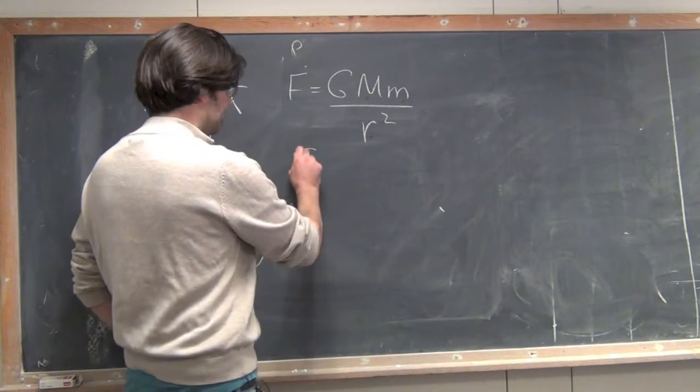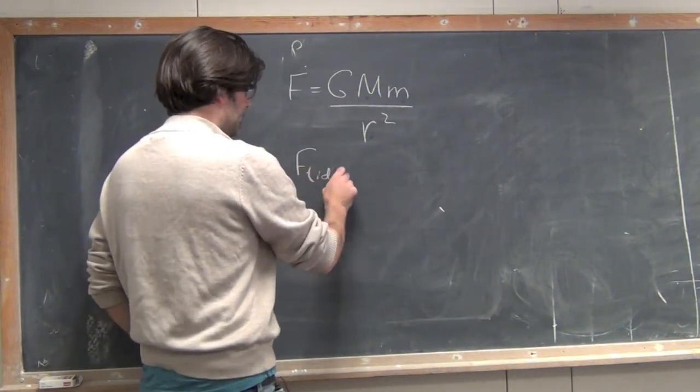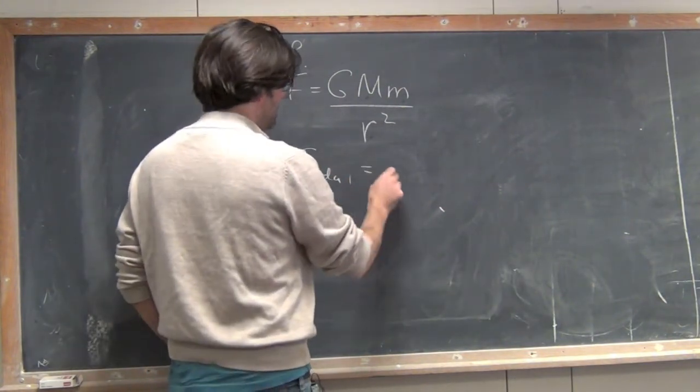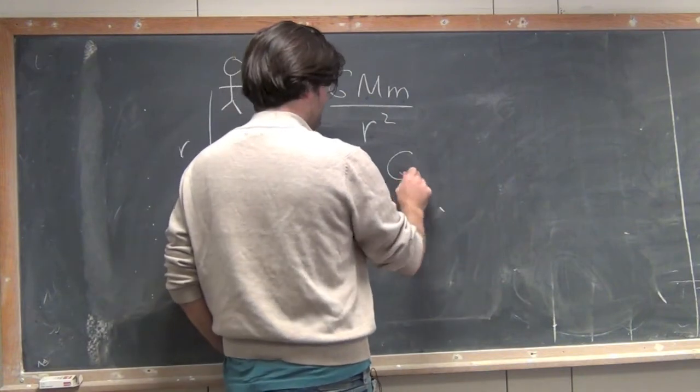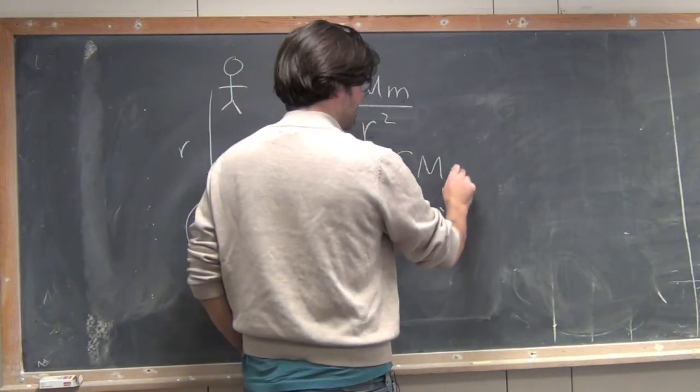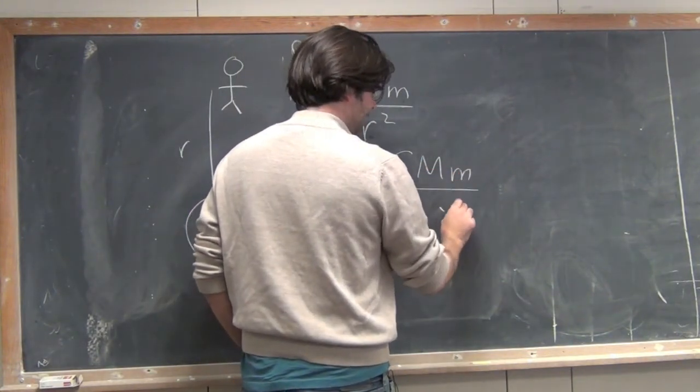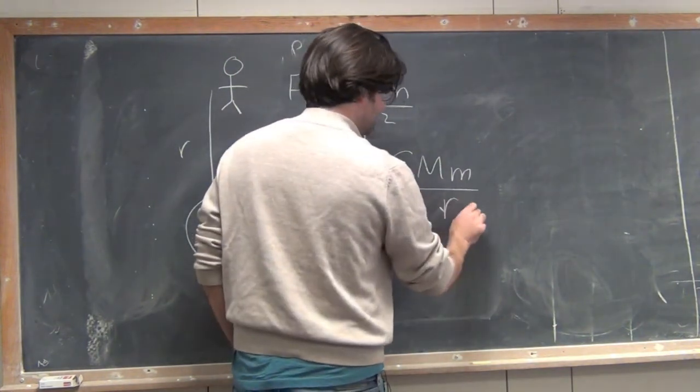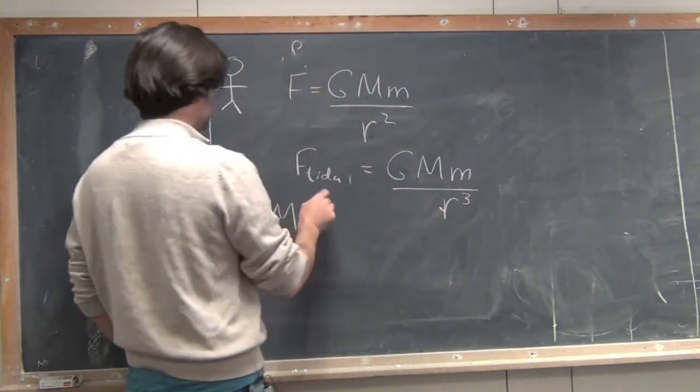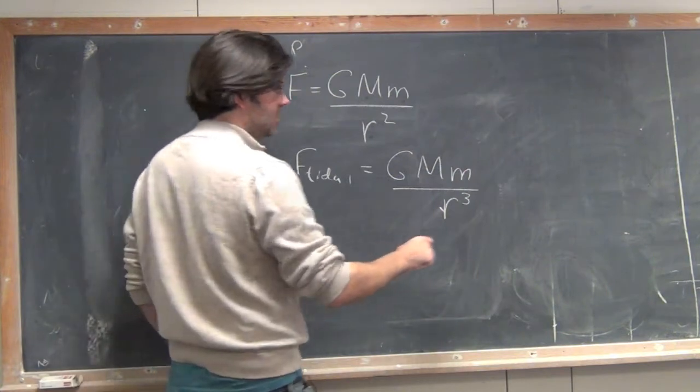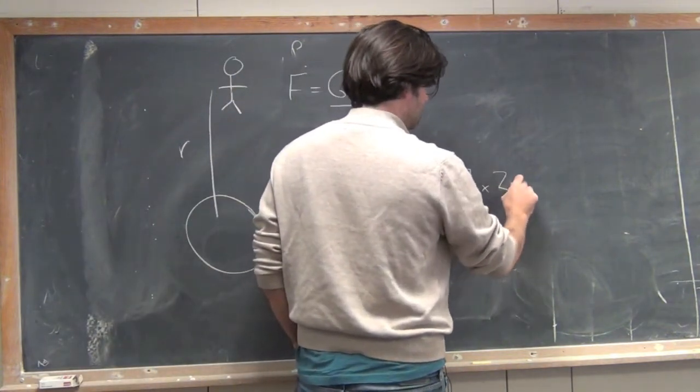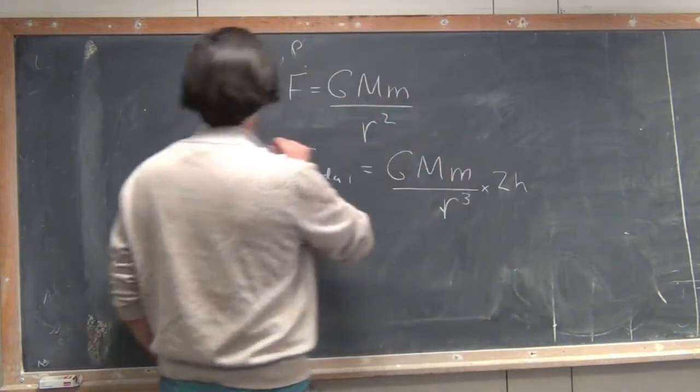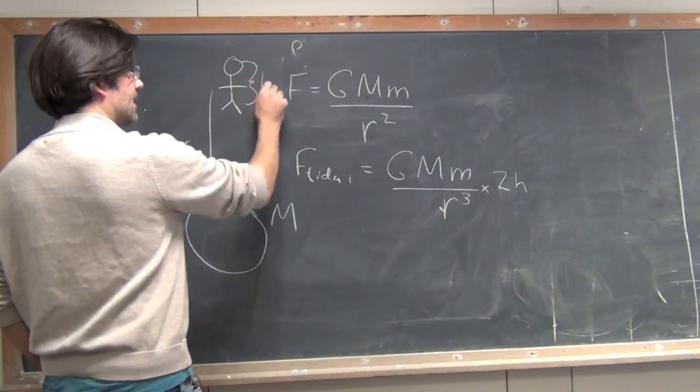So the tidal force we use is just simply G M M, but now there's a slight change. It's over R cubed, where R is the distance to the center of the object, times 2 times the height. I have some object height H.